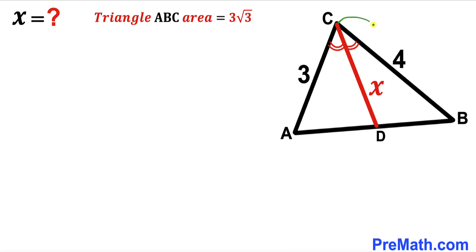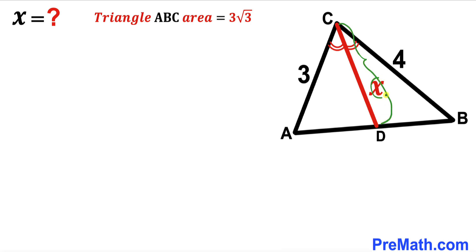The other side length BC is 4 units and the angle bisector is represented by X. As a result, angle ACD is equal to angle BCD.